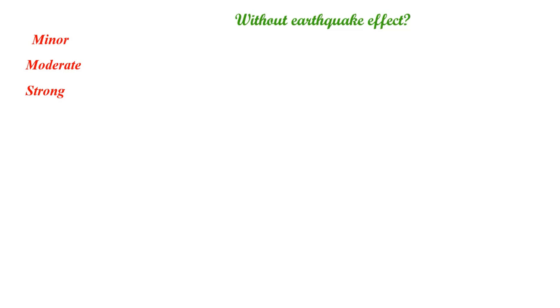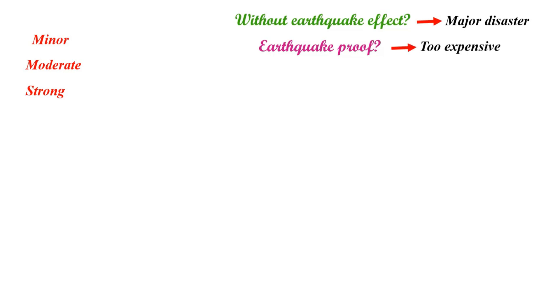Based on the design philosophy of earthquake design, we have to know that earthquakes happen in three ways: minor, moderate, and strong. As engineers, we have to decide whether to design the building as an earthquake-proof building or without considering earthquake effects. If we design without considering earthquake effects, it will become a major disaster if the building collapses. If we design as an earthquake-proof building, it becomes too expensive because we have to use larger sizes of structural members, which is also inconvenient.